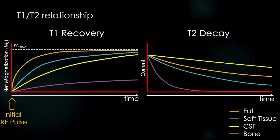So in this context, which RF pulse is being shown in our T2 decay graph? It is actually TR — the next RF pulse we apply. This is a subtle but very important distinction when trying to understand this relationship.